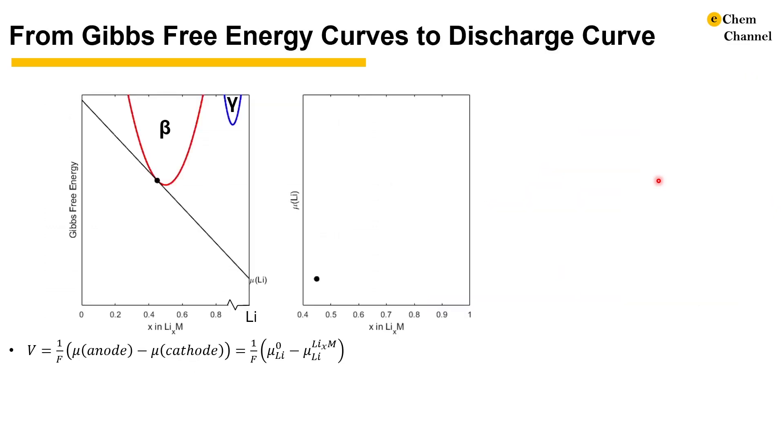To better illustrate the concept, I made a video here that only included the beta and beta plus gamma regions. The Gibbs free energy curves are approximated as parabolas. As the composition increases, the chemical potential of lithium M also increases. I keep track of this chemical potential as a function of composition in the right plot.